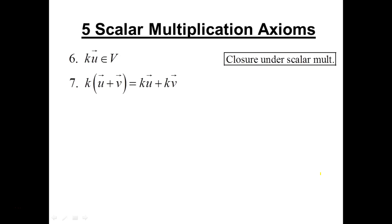Number seven. If you take the vector sum U and V and scale that vector sum, it would be the same as if you were to scale each of them first and then add. And so what you're doing there is distributing a scalar across a vector sum. That property, that axiom must hold.